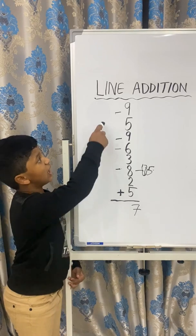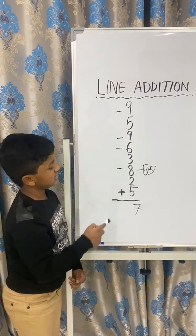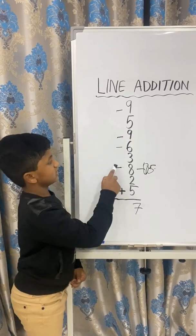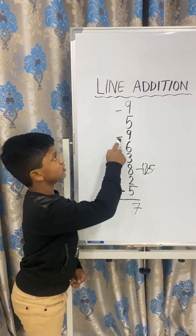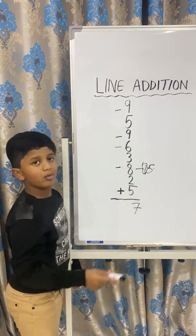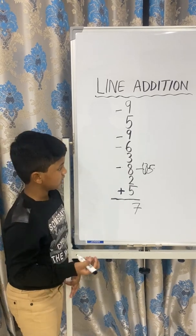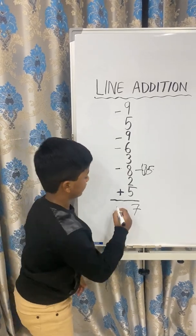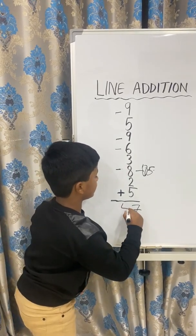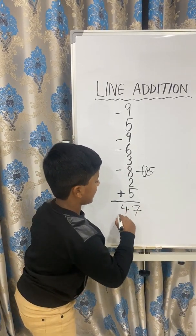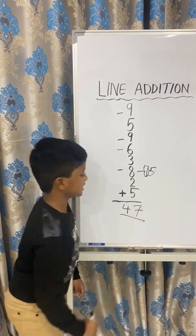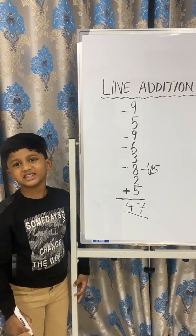Then, count how many dashes there are: 1, 2, 3, 4. There are 4 dashes. So we write 4 here. And our answer is 47.